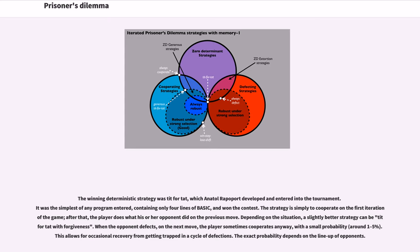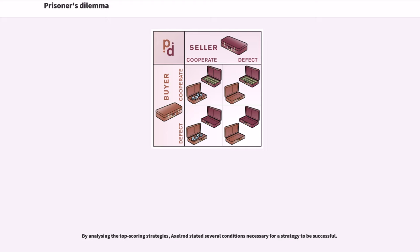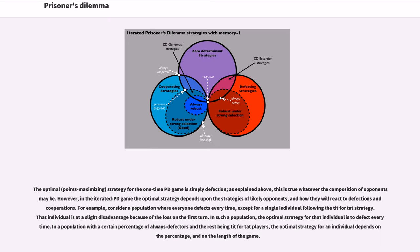By analyzing the top-scoring strategies, Axelrod stated several conditions necessary for a strategy to be successful. The optimal strategy for the one-time PD game is simply defection, as explained above. This is true whatever the composition of opponents may be. However, in the iterated PD game the optimal strategy depends upon the strategies of likely opponents, and how they will react to defections and cooperations.